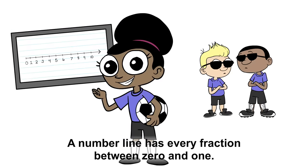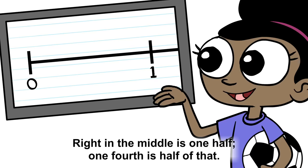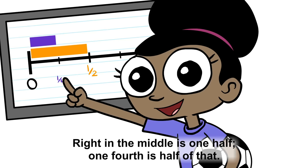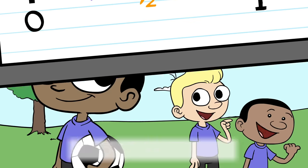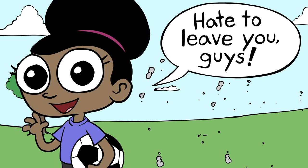A number line is every fraction between zero and one. Right in the middle is one-half, and fourth is half of that. A fraction's parts, you realize, have to be the same size. Hey, we're late for the game. Hey, hate to leave you guys.